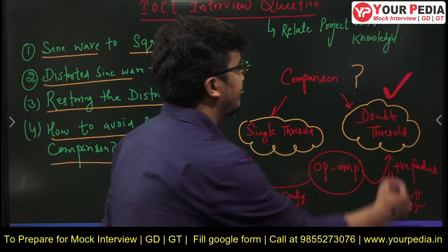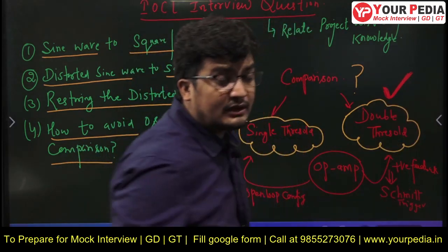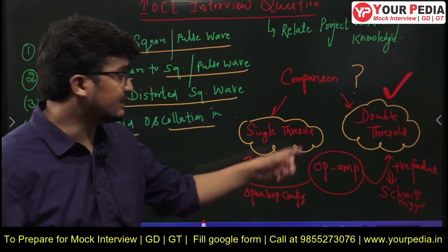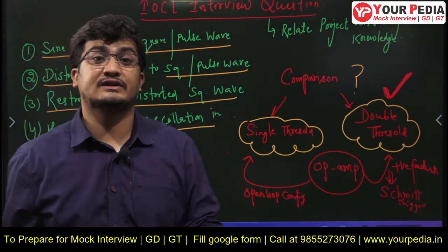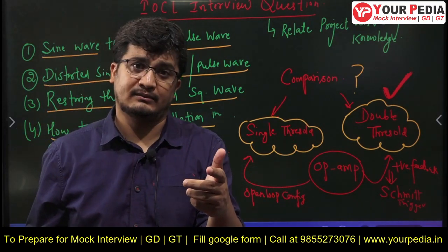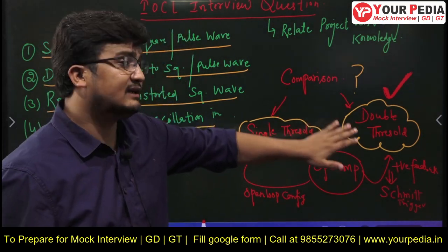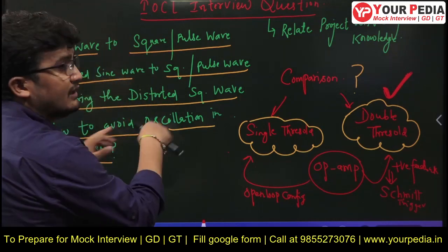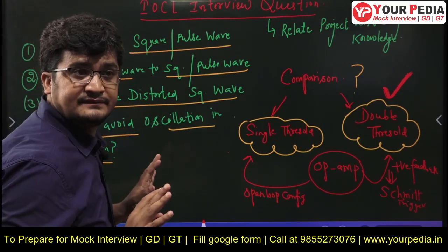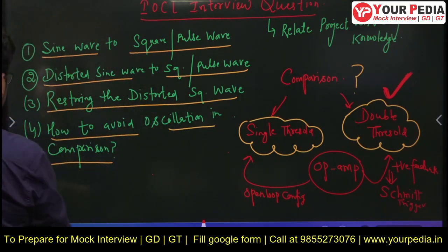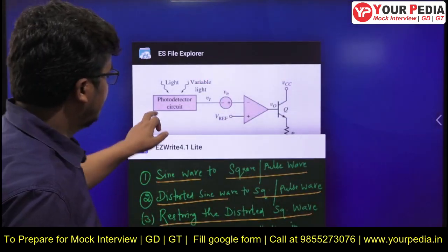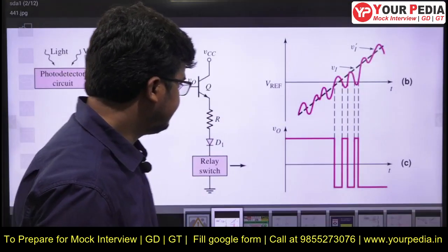So what will I prefer? I will prefer double threshold. But the question is: what are the problems with the single threshold? How do we describe those problems? Whatever I will discuss here, that is all applicable for this as well. Now let us move ahead and start.